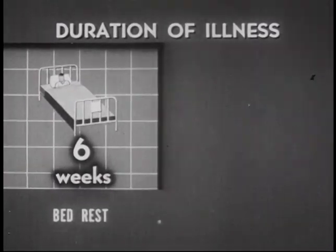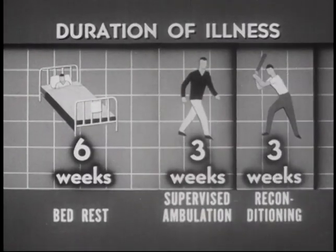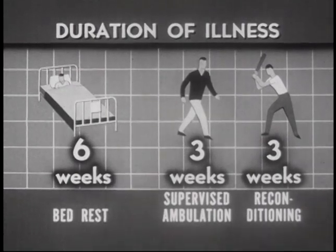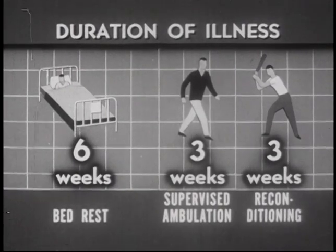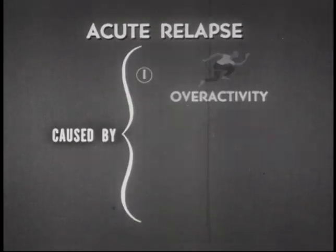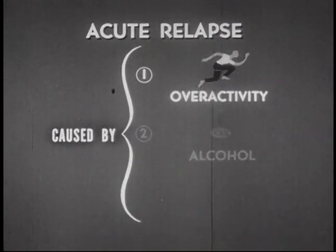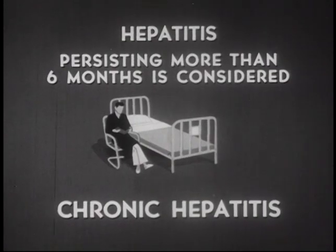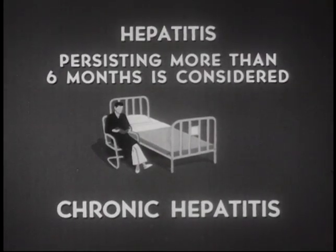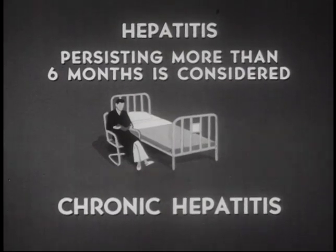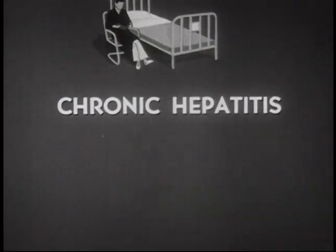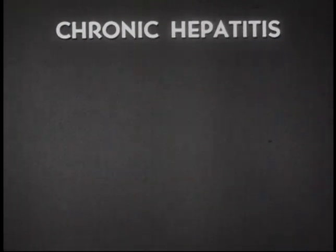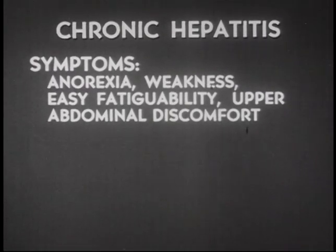The importance of the disease to the Army lies in the duration of the illness. The average case is disabled for 12 weeks. Attempts to hasten this process may result in acute relapse, frequently caused by premature overactivity, ingestion of alcohol, and in some cases the cause of the relapse remains unknown. Hepatitis persisting more than six months is considered chronic hepatitis. Cases of chronic hepatitis often have a history of inadequate treatment during the acute phase. The most common symptoms are anorexia, weakness, easy fatigability, and upper abdominal discomfort.